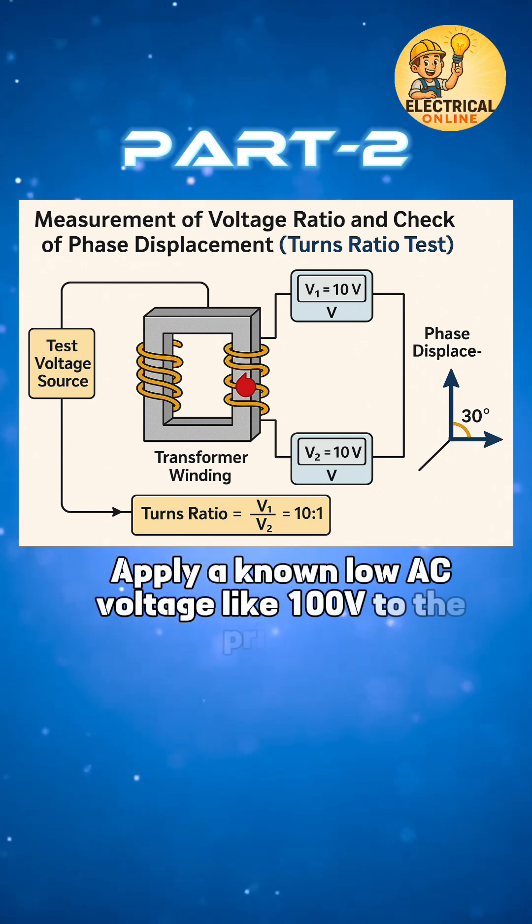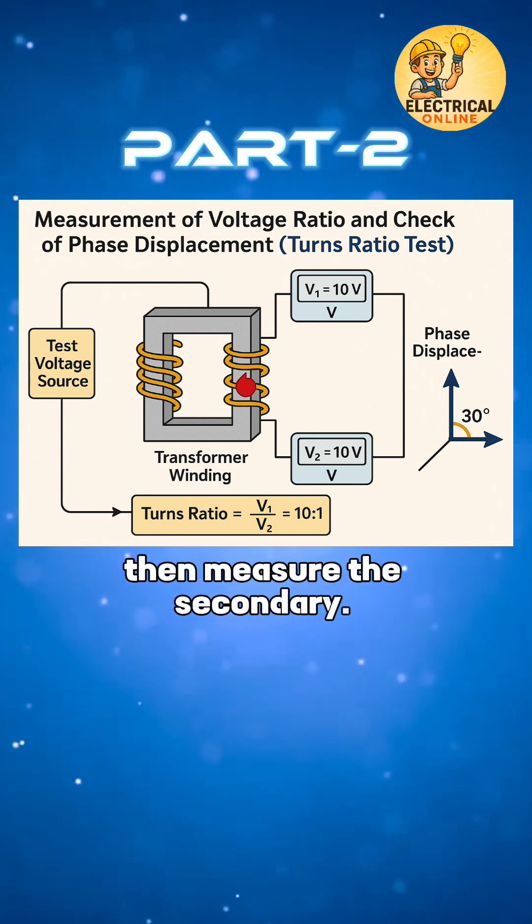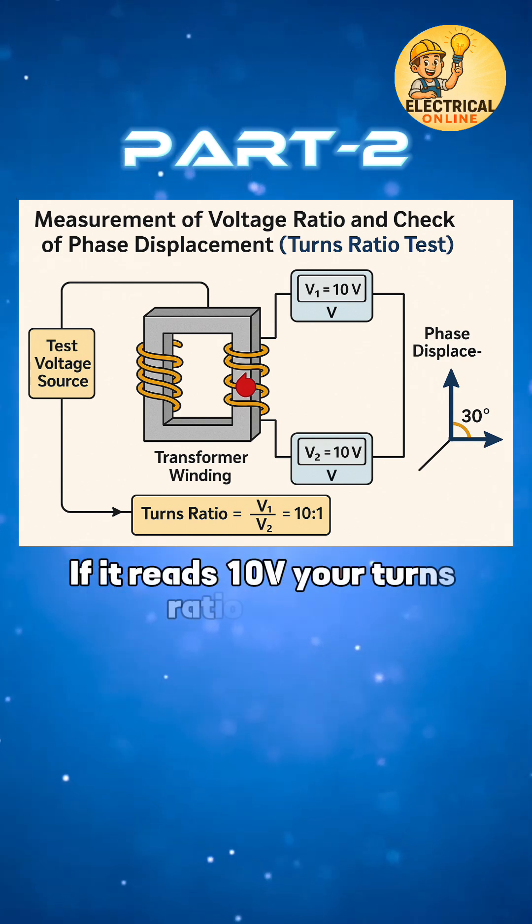Apply a known low AC voltage, like 100V, to the primary, then measure the secondary. If it reads 10V, your turns ratio is 10 to 1, exactly what you'd expect in a step-down system.